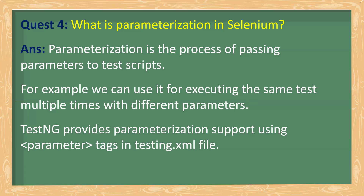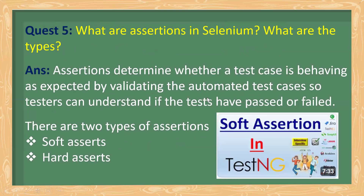What are assertions in Selenium? Assertions determine whether a test case is behaving as expected by validating the automated test cases, so testers can understand if a test has passed or failed. The purpose of assertion is to decide whether the scenario or case is passed or failed. There are two types: soft assertion and hard assertion. By default, people use hard assertion.